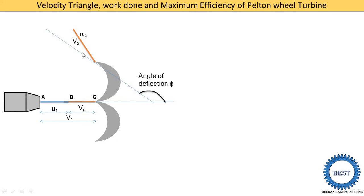The water exits with velocity V2 making angle alpha 2 with the X-axis. V2 is divided into two components: a horizontal component indicating the whirl velocity VW2, shown as a green line, and a vertical component known as the flow velocity VF2. This is similar to what we learned in the curved plate impact derivation.